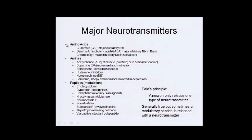A couple of the major neurotransmitters: amino acid ones are glutamate, GABA, and glycine. GABA and glycine are both inhibitory; glutamate is excitatory.